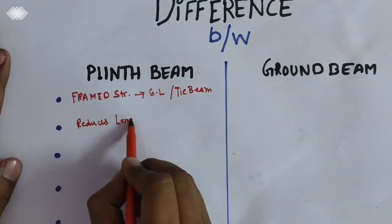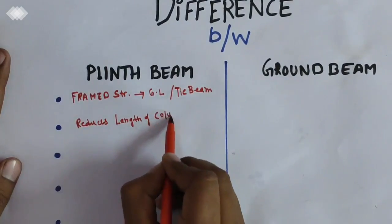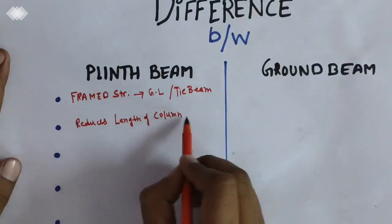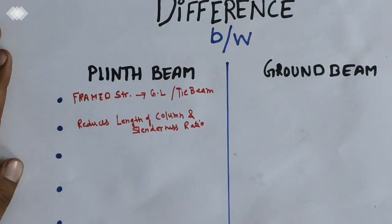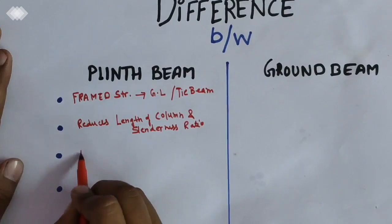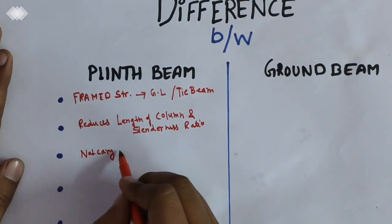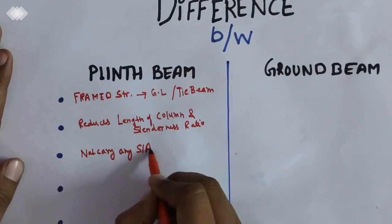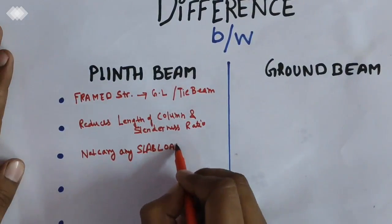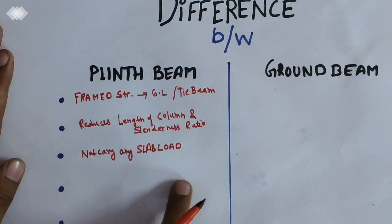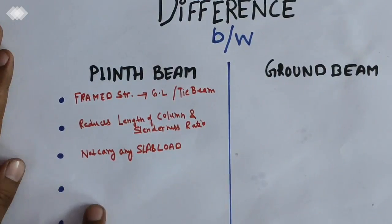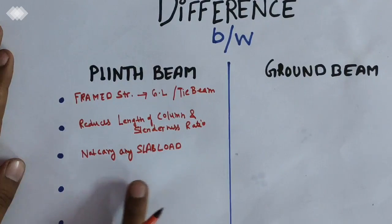The plinth beam is also called the tie beam because of its frame structure. It reduces the length of the column and its slenderness ratio. It is constructed at ground level and it does not carry any slab load.